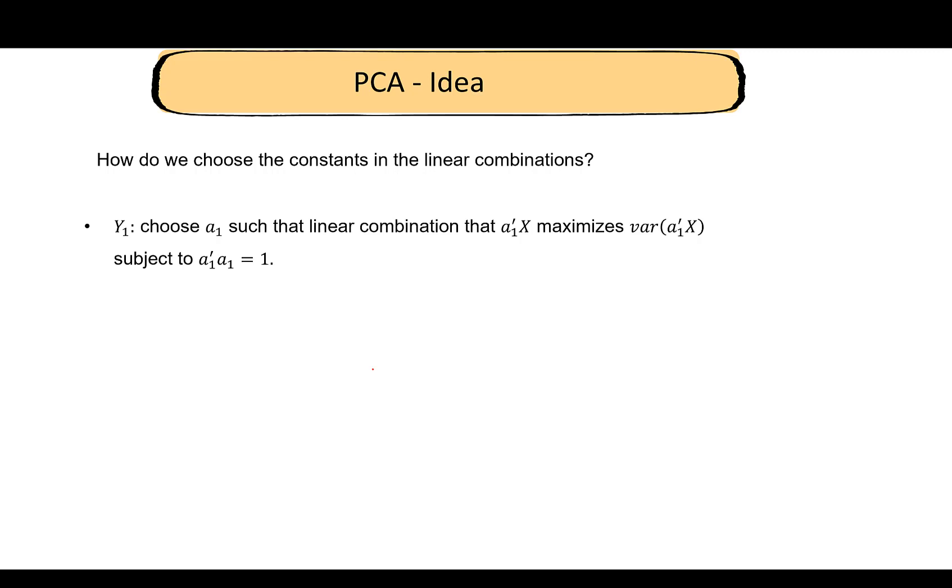For Y₁, we want to choose a₁ to retain the variability or the information, so basically we want to find the constants that maximize this variance. We want a₁ to maximize the variance of a₁ᵀx. Think about a random variable—if you multiply that random variable by 10, the variability increases. If your variable is w, variance of 10w is greater than variance of w, variance of 100w is greater than variance of w.